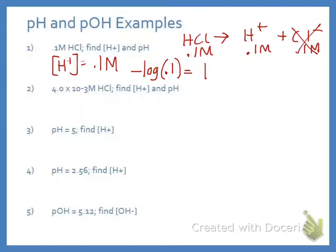We would get 1. But because this has one significant figure, we would actually report that as the pH equals 1.0 because we need one significant figure.